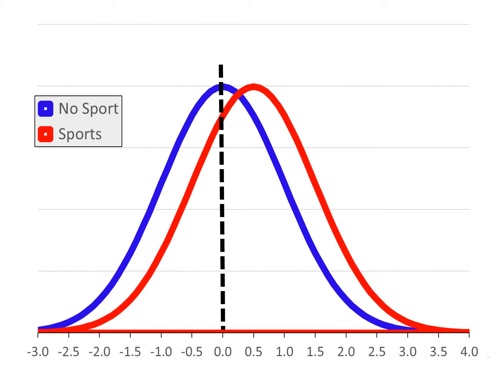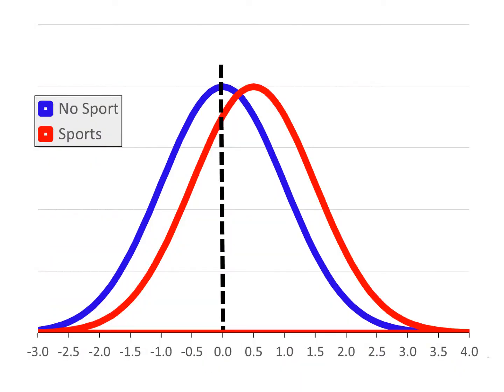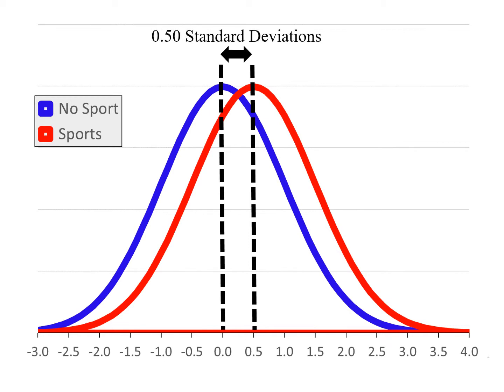Nothing has changed other than the scaling on our x-axis. Now let's look at the distribution for students engaged in sports — the red distribution. Their average was 83. Let's add a line for the mean self-confidence score for students who played sports. Our effect size was 0.50, indicating a one-half standard deviation difference between our means, and the mean for students involved in sports lines up perfectly with a z-score of 0.50 relative to the no sports mean.